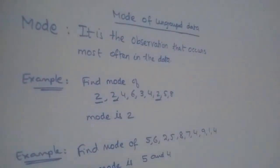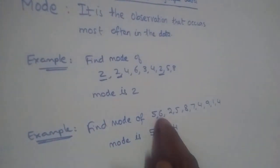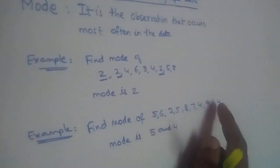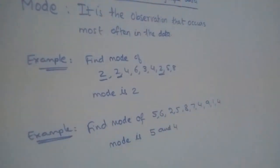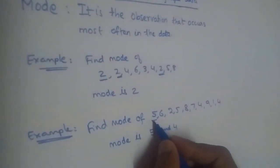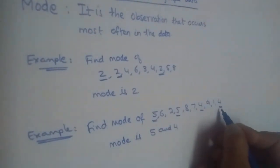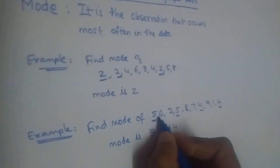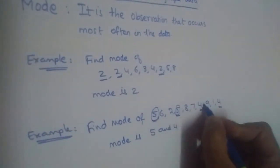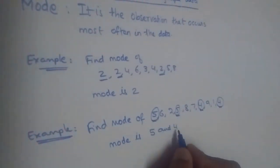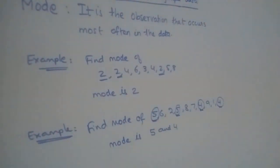Find the mode of 5, 6, 2, 5, 8, 7, 4, 9, 1, 4. Here 5 appears twice and 4 appears twice as well. So the mode is 5 and 4 — we have learned that a dataset can have more than one mode.